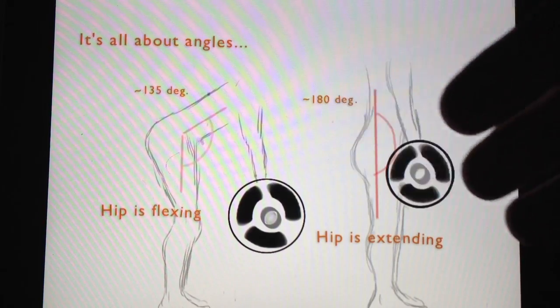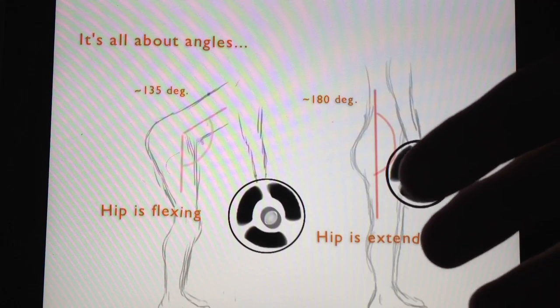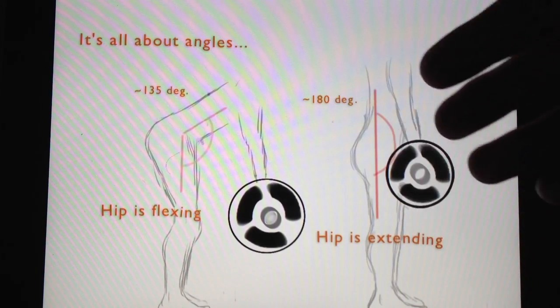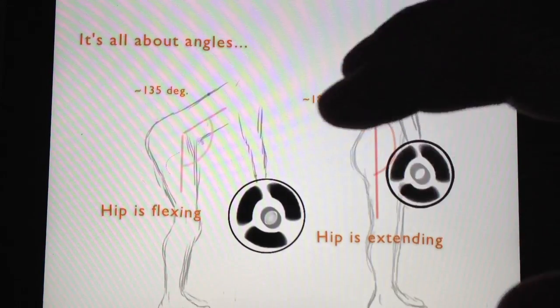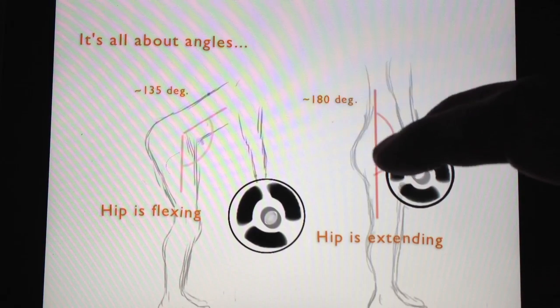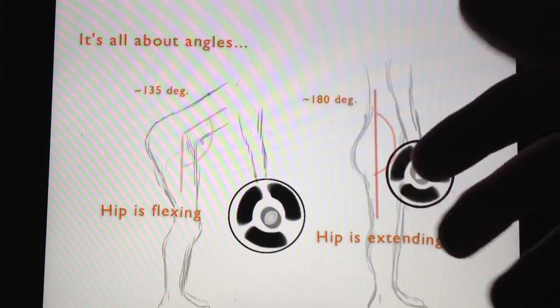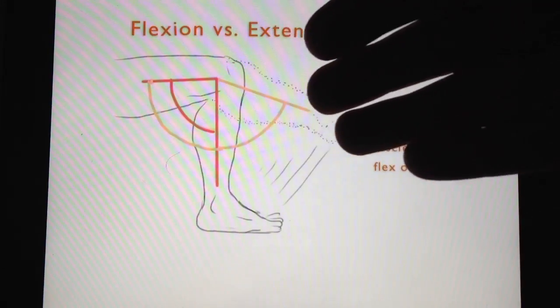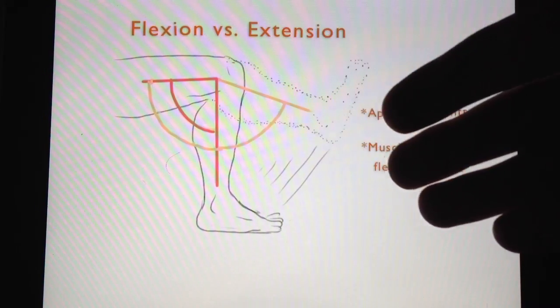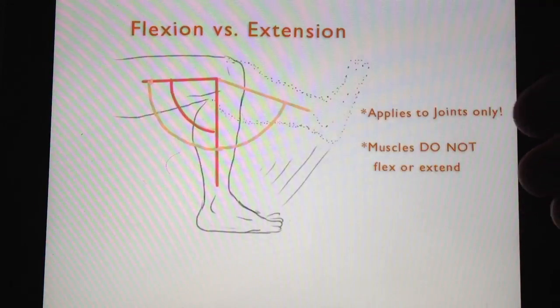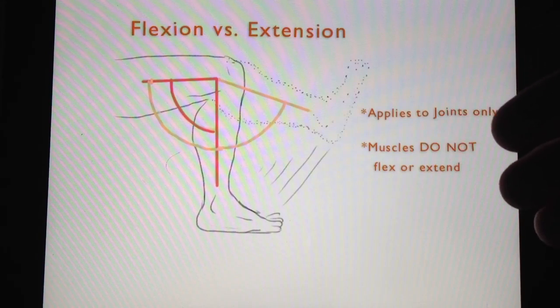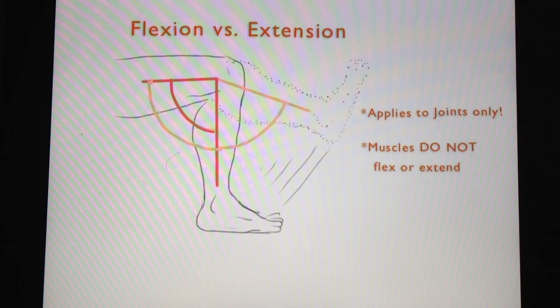So it's all about the angles. You can think of it as some geometry or some math, but that is essentially what hip flexion and extension is, or the general concept of flexion and extension, even when we apply it back to the knee I have here. So all joints in the body undergo flexion and extension. Muscles do not. That's my basic message to you.